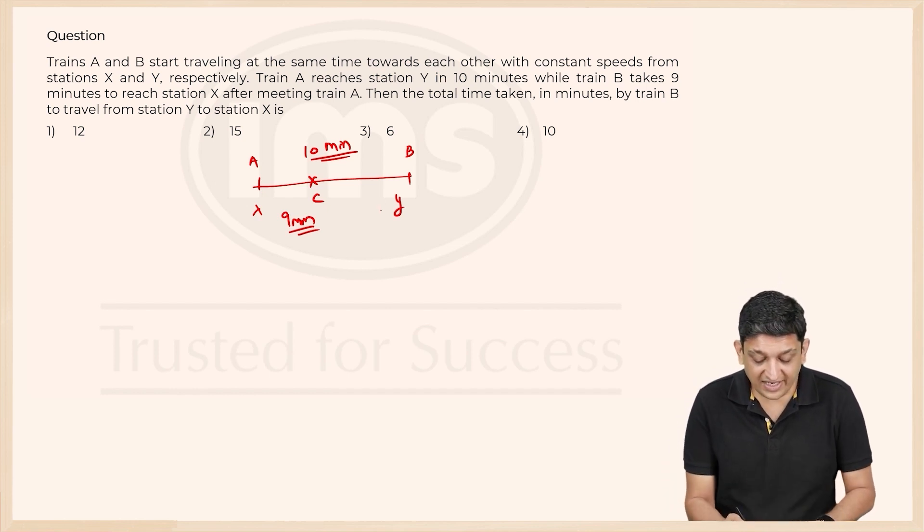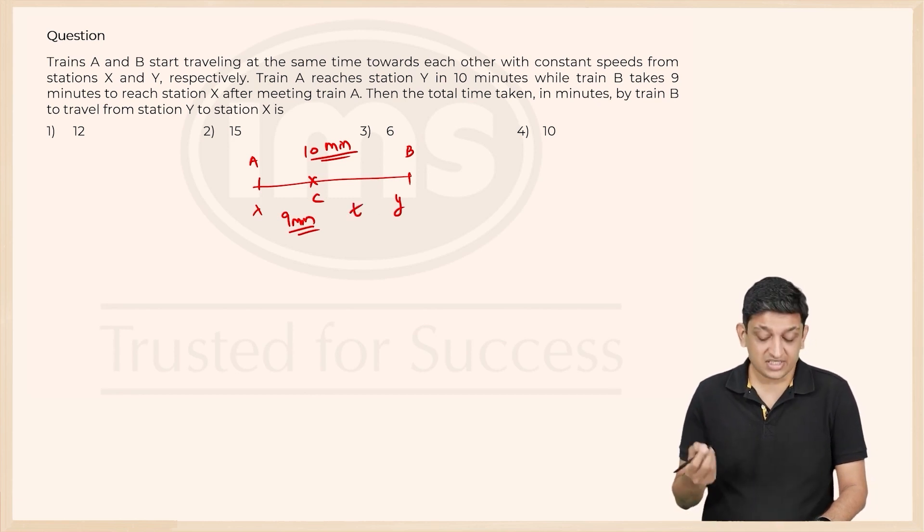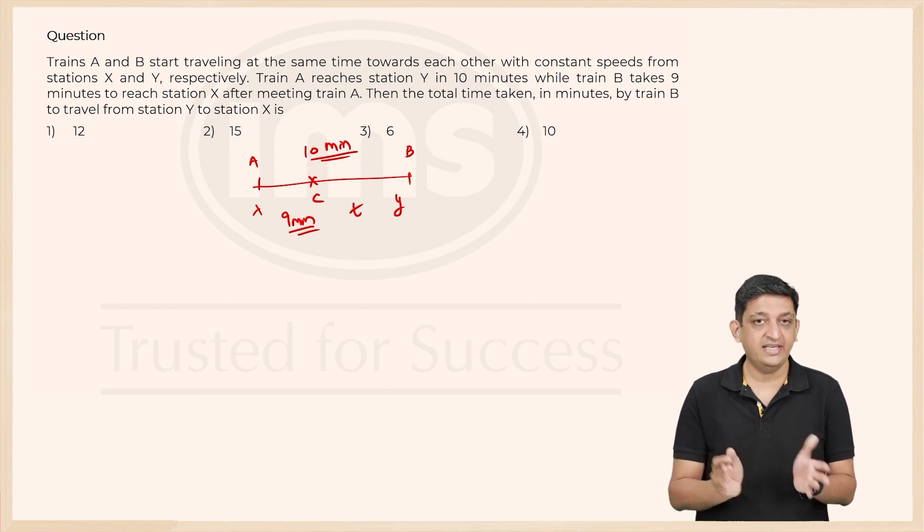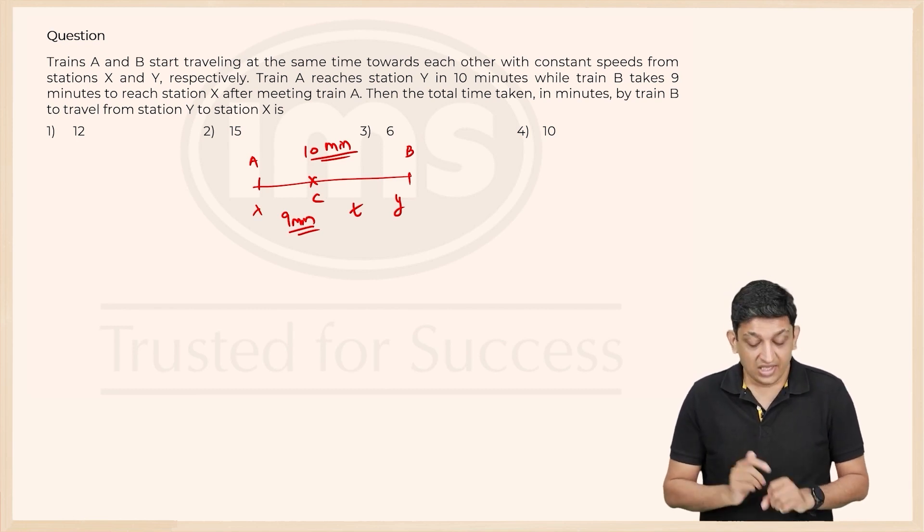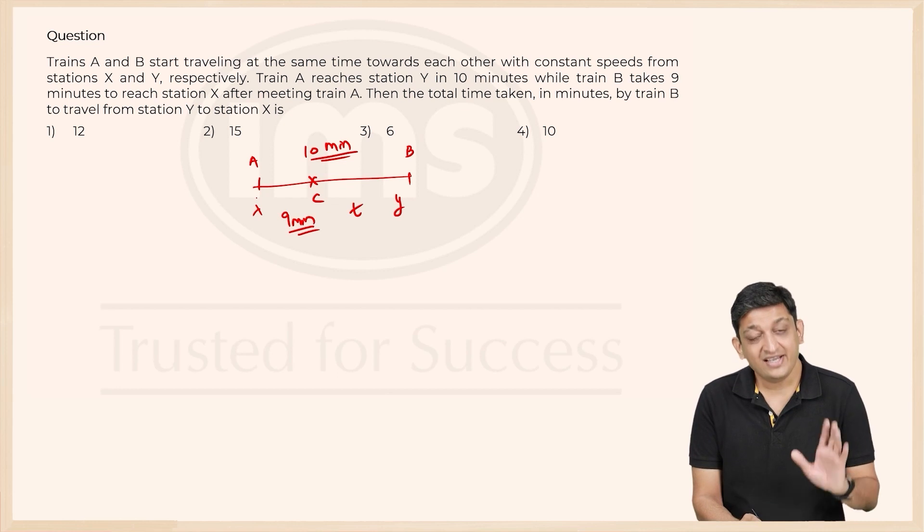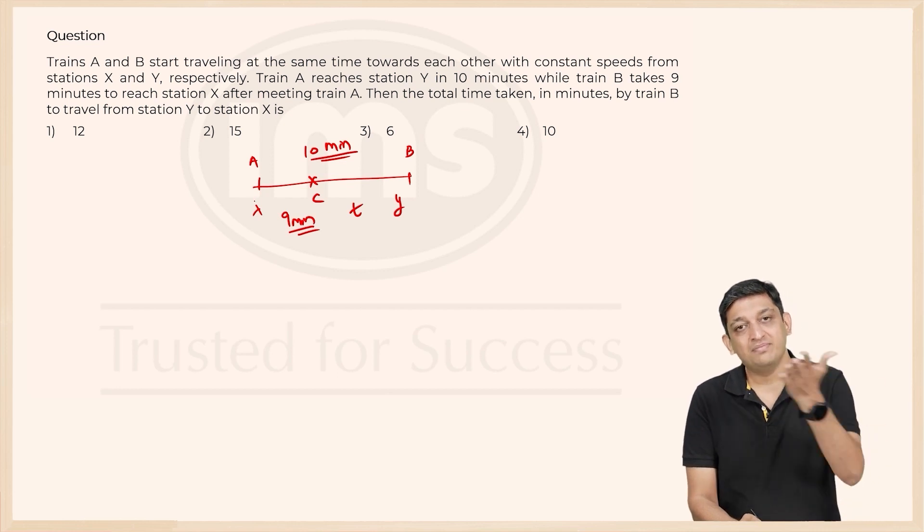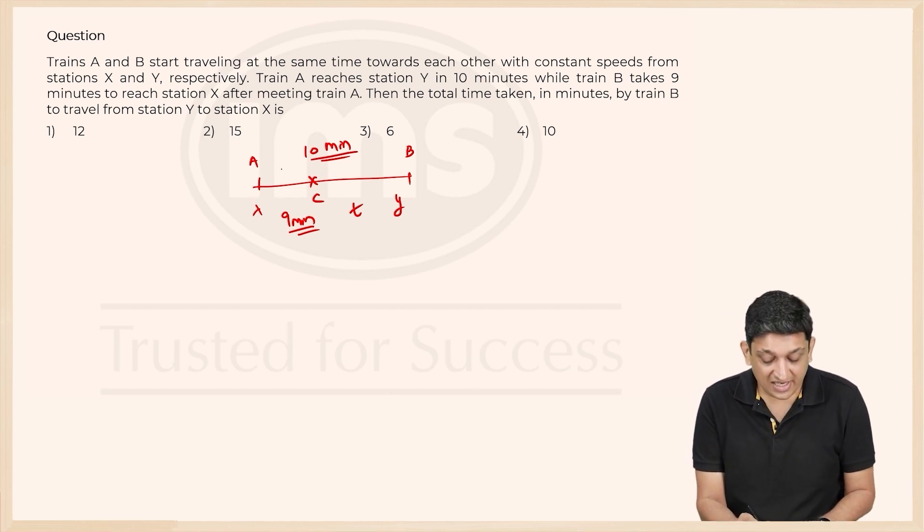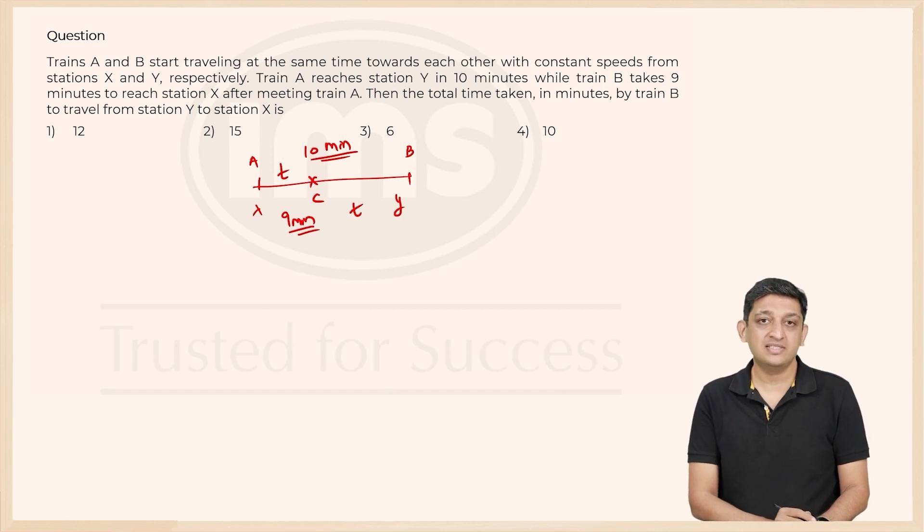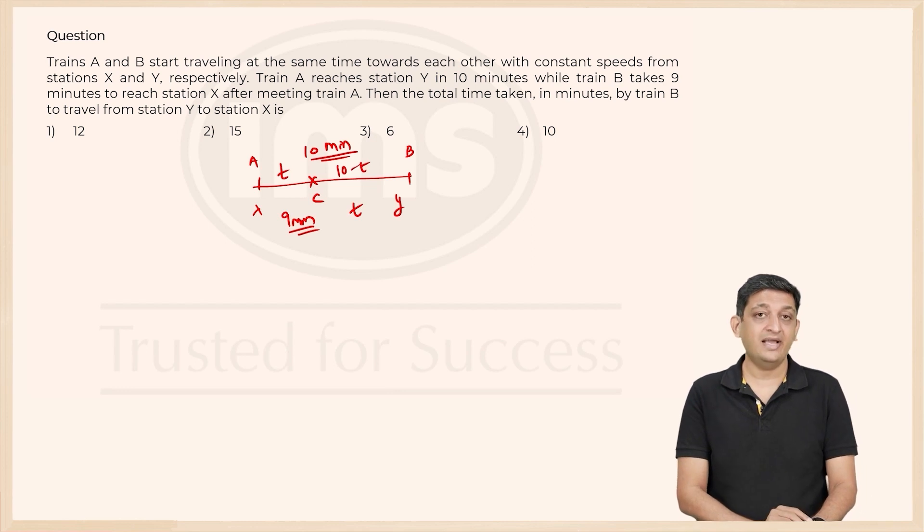Let us say train B takes T minutes to go from Y to C, till the meeting point. Train A started at that same point in time. It met train B at this point C. It would have also taken T minutes to cover this distance. We know that train A covered the entirety of the distance in 10 minutes. If the first part was covered in T minutes, the second part will be covered in 10 minus T minutes.